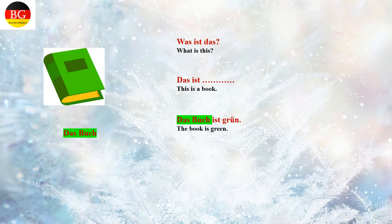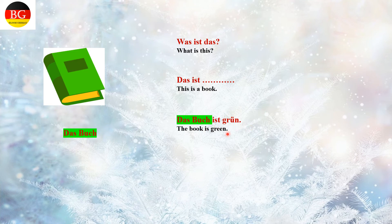Let's do one more example. This is a book — 'das Buch' — 'das' represents the neutrum. Was ist das? Das ist ein Buch. If we want to give more detail about the book: 'Das Buch ist grün' — the book is green. The unbestimmter Artikel for neutrum is 'ein', so the answer is 'ein Buch'.